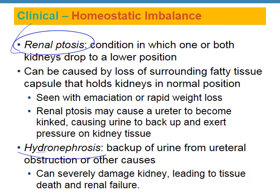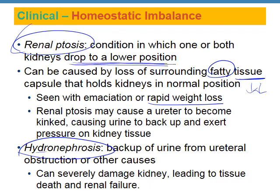Some clinical issues can arise because of the kidney's anatomy. With rapid weight loss, if the perirenal fatty capsule starts to degrade, it can cause one or both kidneys to drop to a lower position. If that happens, you might get a kink in the ureter. Remember, you have your kidney and ureter coming down to your bladder — if it drops and kinks, that can cause a backup of urine into the kidneys. A backup of fluid means the kidneys won't be able to do many of their functions.